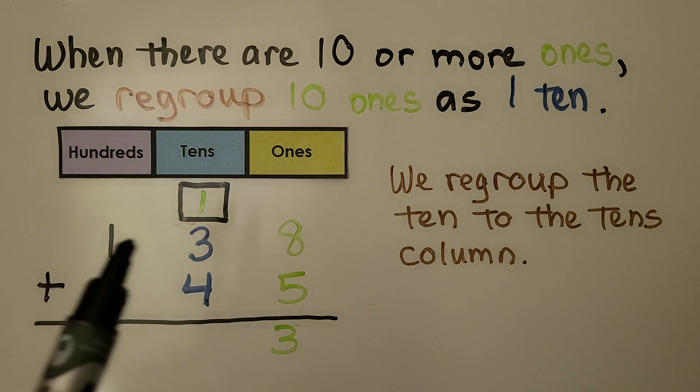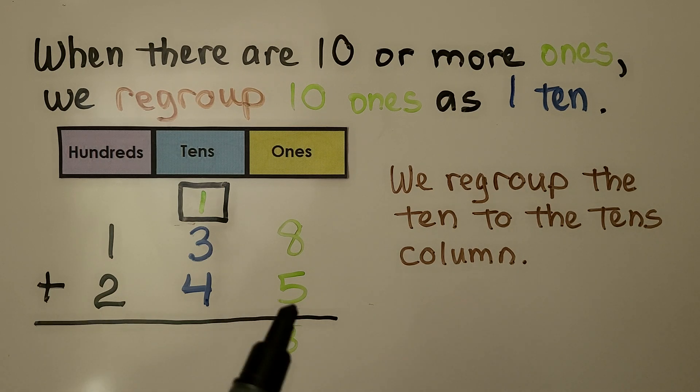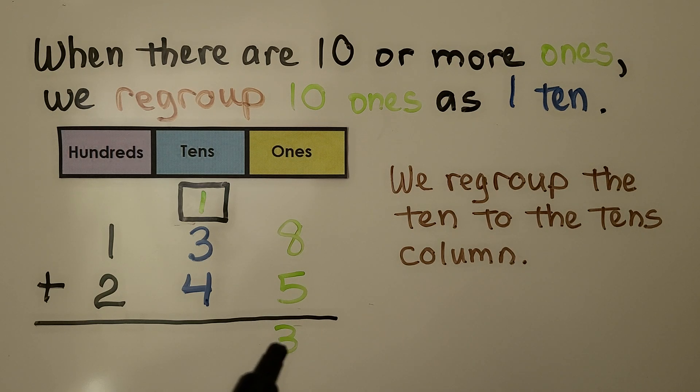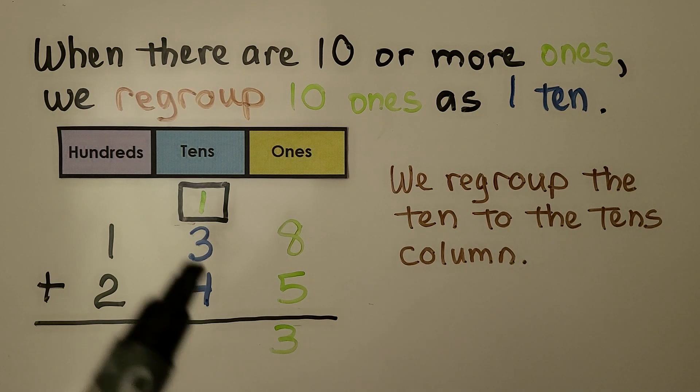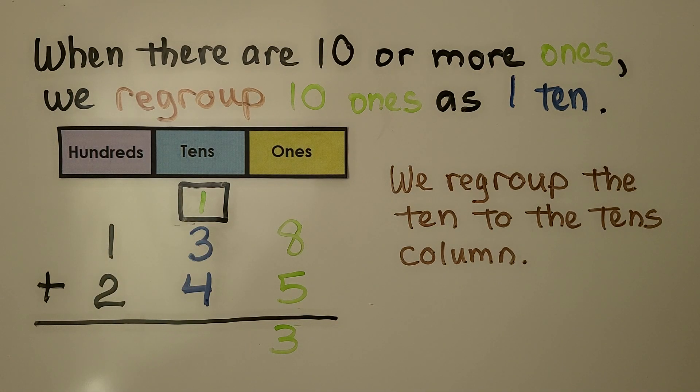We have a three-digit number, 138. We're adding it to another three-digit number, 245. We start by adding the ones. We have eight ones plus five ones. That's 13 ones. We regroup the ten to the tens column and write the three in the ones column.